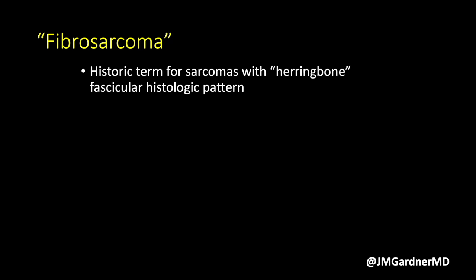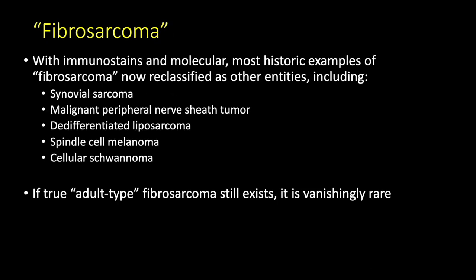I've even seen melanoma with a herringbone pattern, so most things that have the herringbone pattern are not fibrosarcoma. In the WHO bone and soft tissue tumor book, adult-type fibrosarcoma is still listed as an entity, so technically it still exists. But I'll tell you: if it exists, it is vanishingly rare. It's a diagnosis I have personally never made in 10 years of practice as a soft tissue pathologist — I have never called something fibrosarcoma NOS or adult-type fibrosarcoma.